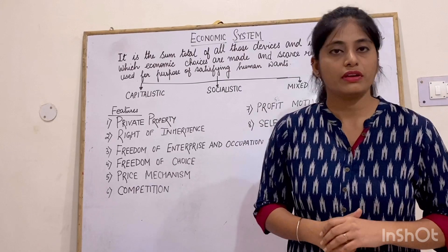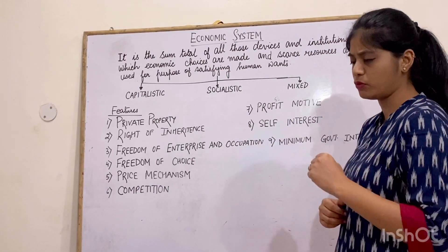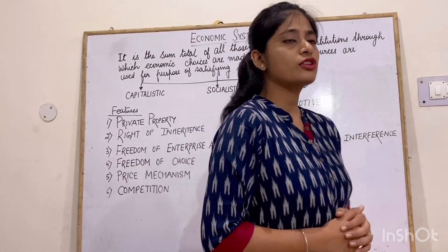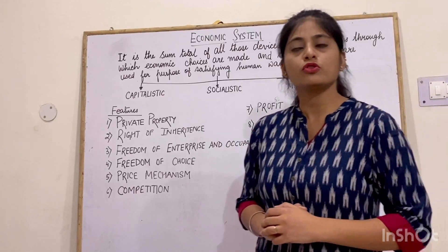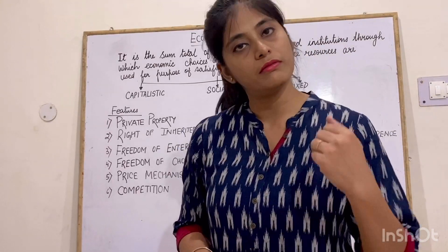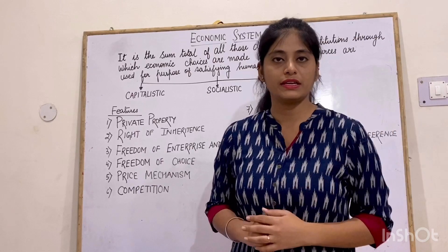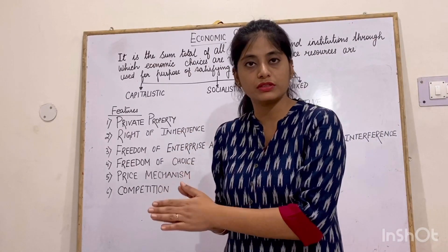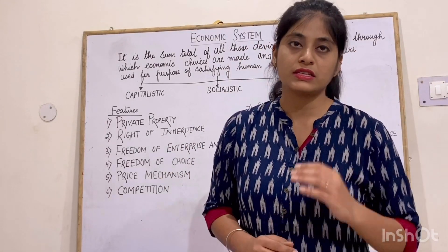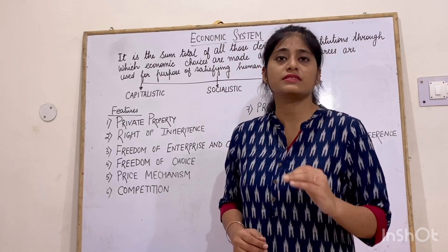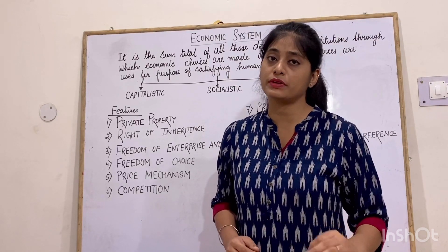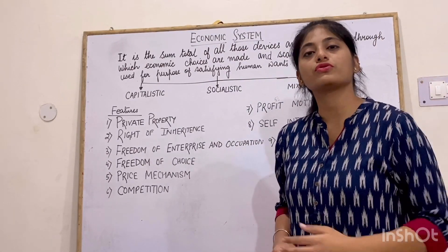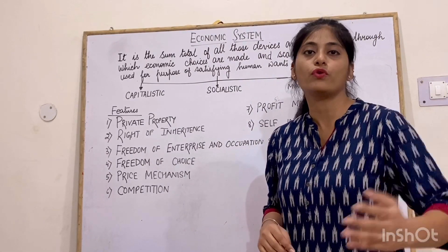Second is your right of inheritance. Right of inheritance means — suppose mere papa ka koi personal property hai, toh unke baad property kisko milega? Mehko milega. That is your right of inheritance. Because the resources are of private individuals, they have the right of inheritance. Like, a son has the right of inheriting those properties from his father. You can acquire the resources of your fathers, forefathers, and so on.